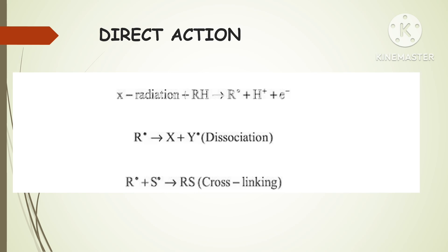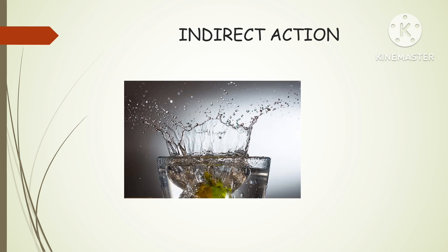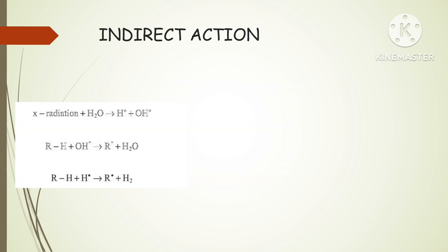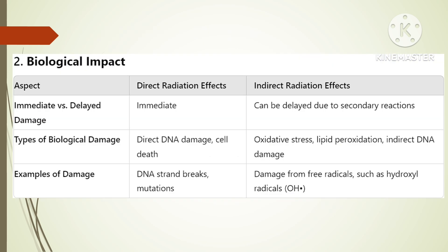Direct radiations are not dependent on water, but indirect effects are strongly dependent on the presence of water. The initial interaction of the photon occurs with the water molecule, which constitutes about 70% of mammalian cells, and two-thirds of the biological damage to mammalian cells from X-rays is due to indirect action only. Ionizing radiation initiates a complex series of chemical changes in water, collectively known as radiolysis of water, ionizing it into hydrogen and hydroxyl free ions. These free radicals then interact with biological macromolecules.